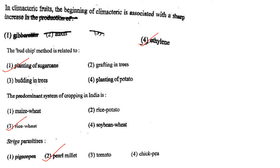Next one: The bud chip method is related to option 1, planting of sugarcane; option 2, grafting in trees; option 3, budding in trees; option 4, planting in potato. Answer is option 1: planting of sugarcane.